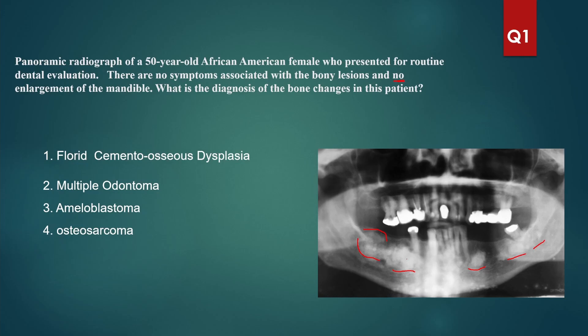You see this hole here — around the mental foramen — but I don't see any cystic areas. So this is definitely not ameloblastoma. This is not odontoma. In osteosarcoma, there will also be enlargement of the bone most often. So the only answer we are left with is florid cemento-osseous dysplasia, because it's generalized all around in the mandible.